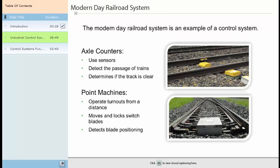The modern-day railroad system is an example of a control system. While it may have started as a manual system, over the years automated features have been added. Today the railroad transports goods and people using automated devices, such as axle counters.